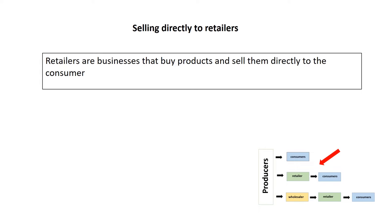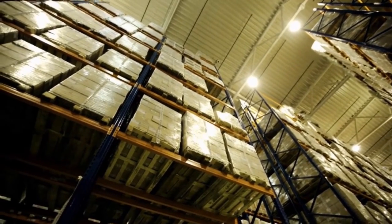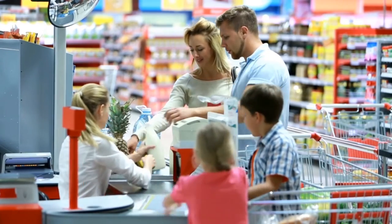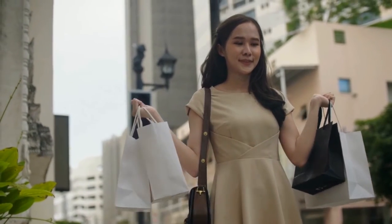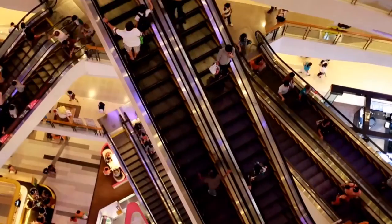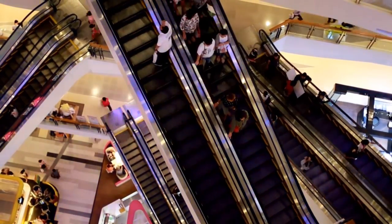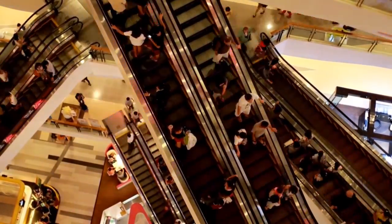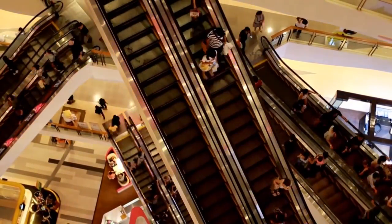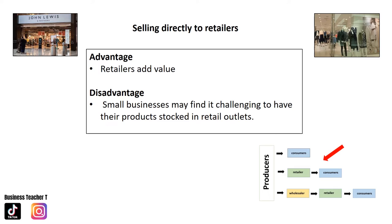Retailers are businesses that buy products and sell them directly to the consumer. When a producer sells directly to the retailer, the products will be in more places that are convenient to consumers, meaning more potential customers may come across the product. Retailers can add value by including additional services such as breakdown cover, gift wrapping, and warranties. A disadvantage is that small businesses may find it challenging to have their products stocked in retail outlets.